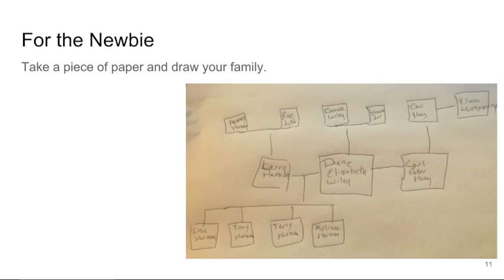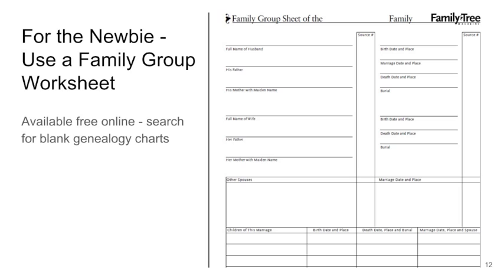Just the basics and relationships: Diane was married twice. She had four children with Larry and none with Carl. Diane's parents are Kenneth and Leonore. Use your family names and include whoever you want. The same kind of information, plus more details, goes on a family worksheet. You can find blank genealogy charts on many sites, including FamilySearch.org. There are a number of different types — take your pick.